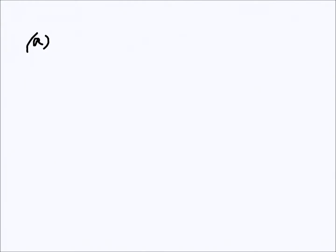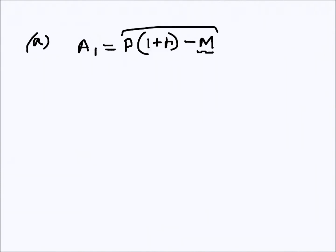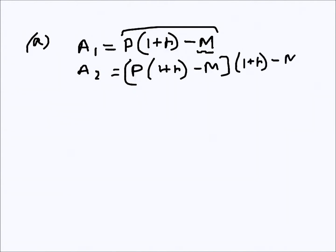Capital A means the amount owed after a certain unit of time — in this case monthly. So A₁ is the amount owed after one month. If the principal loan amount is P and the interest rate is r, this is the amount owed after one month before repayment is made. After repayment of monthly amount m, this is the amount owed. Similarly, after two months the interest applies to the whole amount, and we get the amount owed after two months.